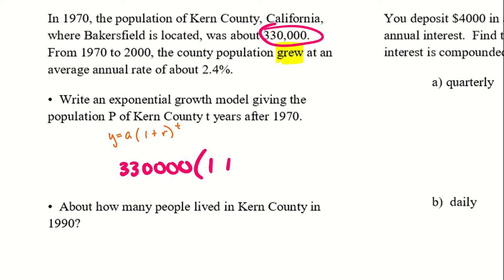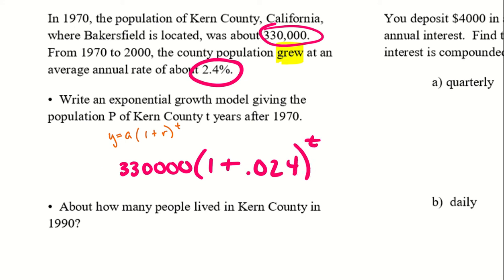We have 1 plus the rate, which is 2.4%. Remember, we have to move the decimal two times to the left, so 0.024, and then to the power of t. Since we are dealing with population, we'll write it as p instead of y.